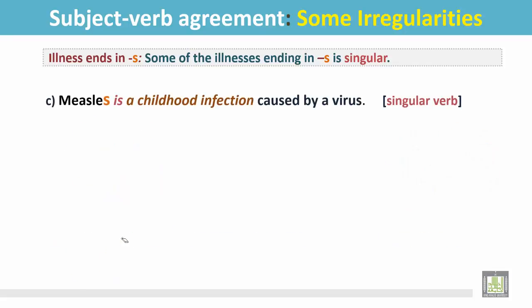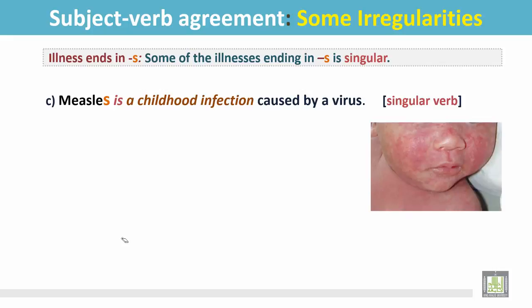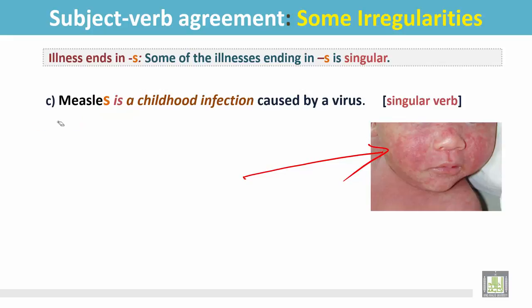Another example: 'Measles is a childhood infection caused by a virus.' In this picture we see a child affected by measles. This proper noun — the name of the disease — ends in S. It's not plural; it is a singular noun, so the verb is singular.